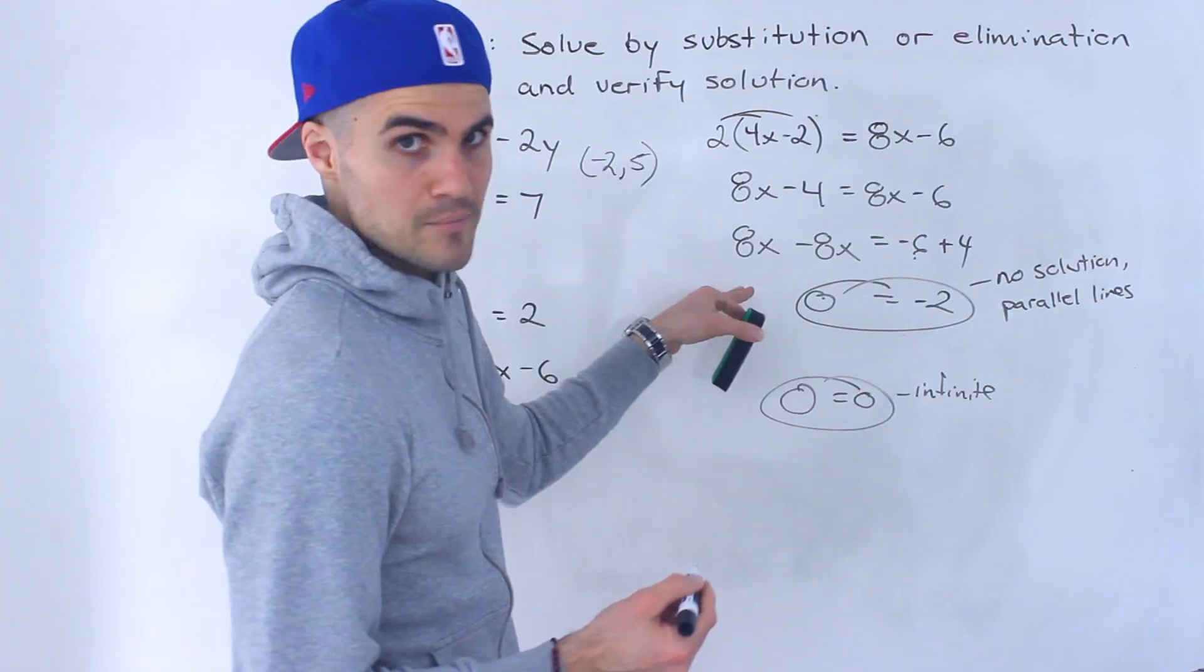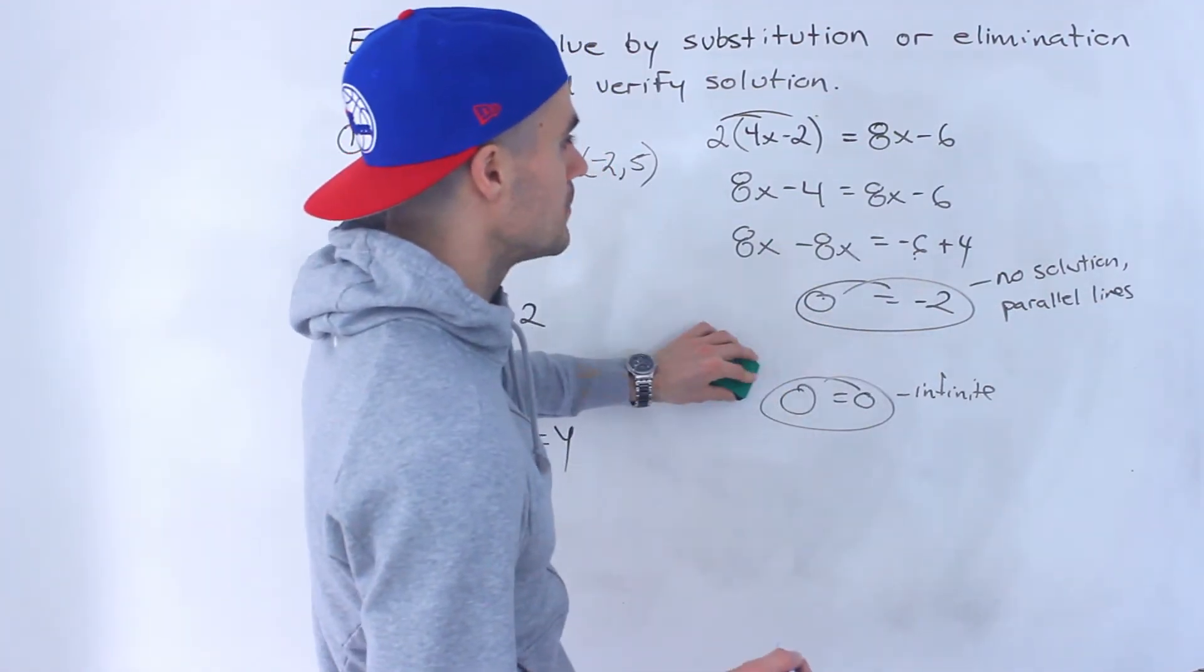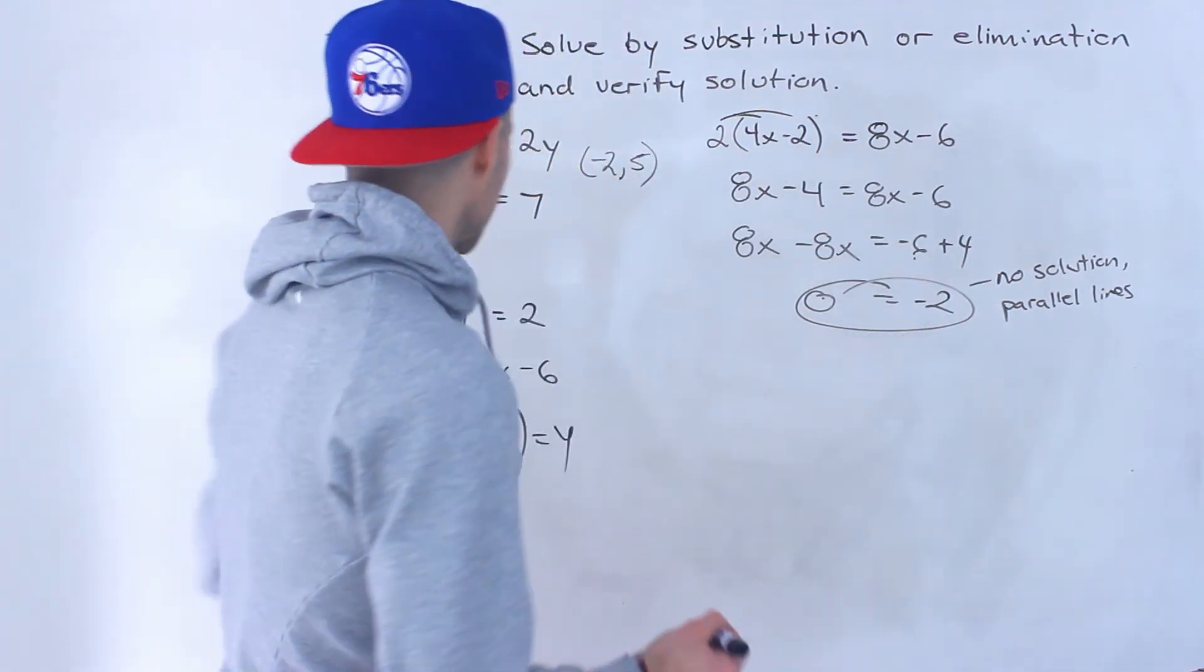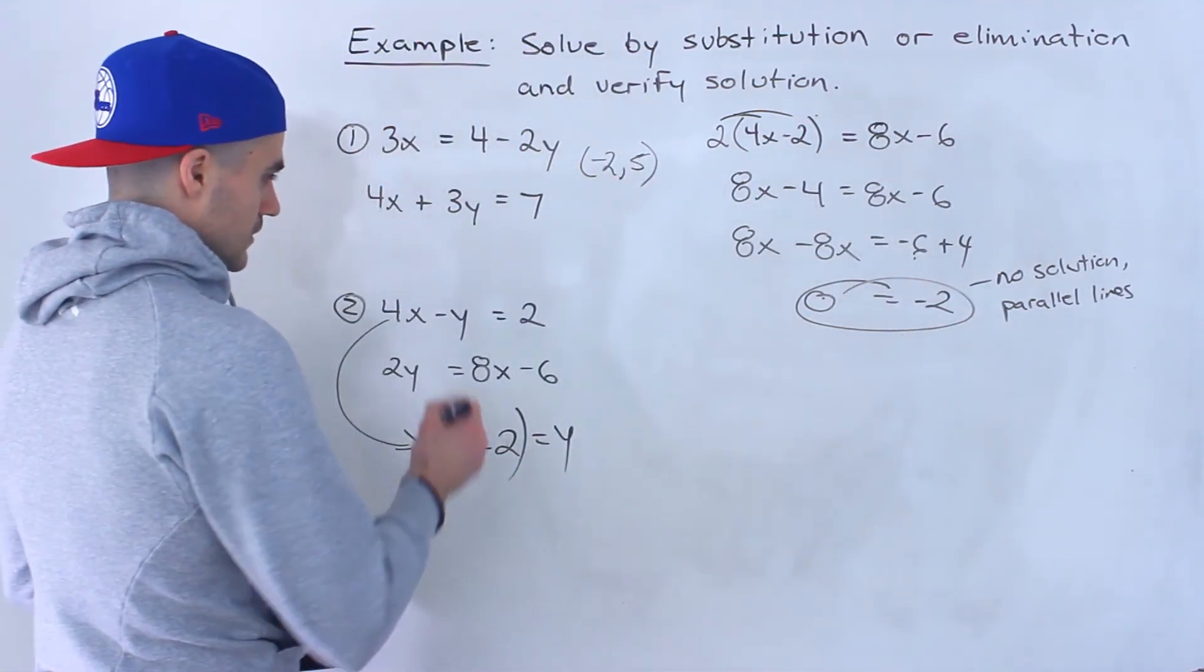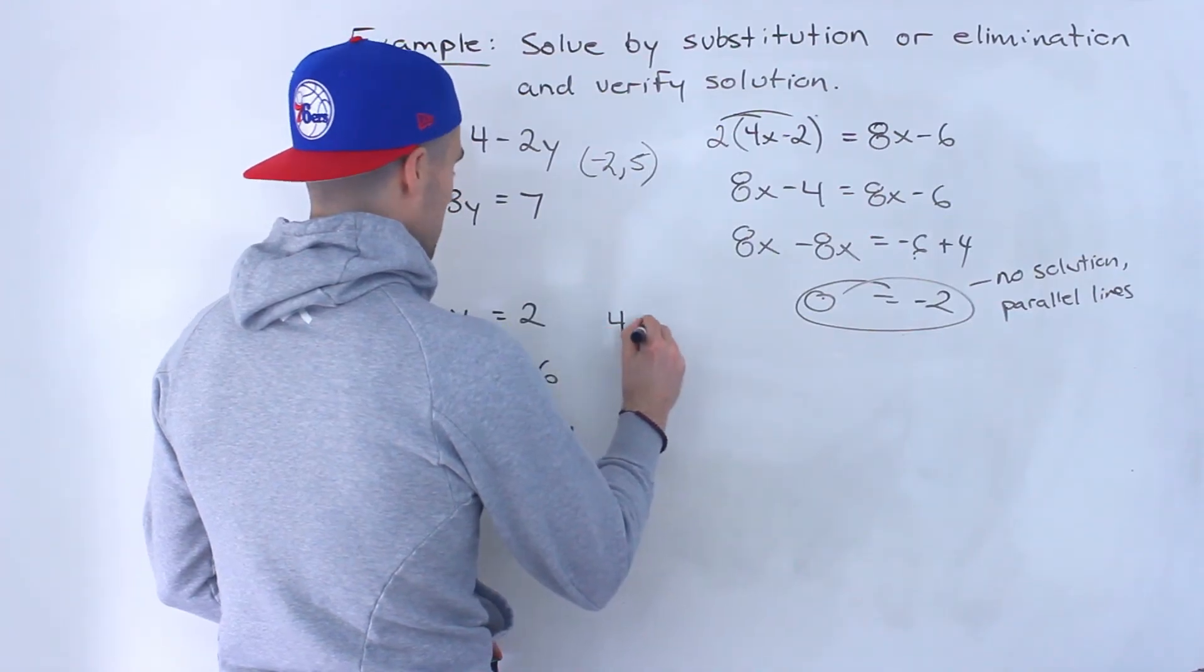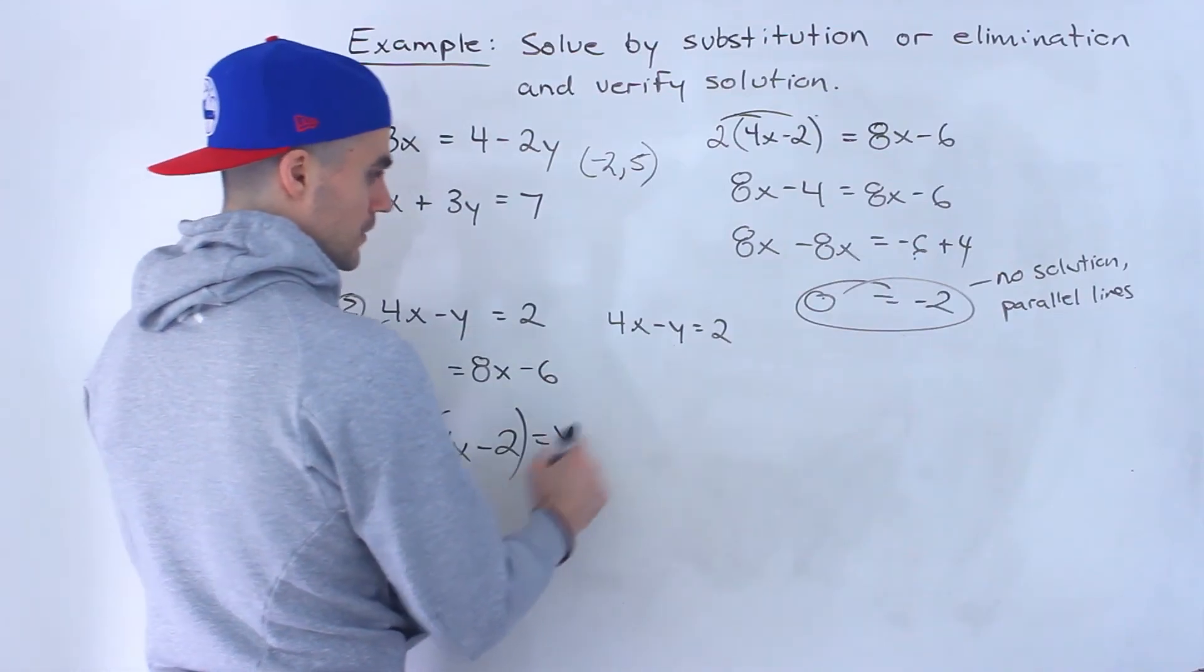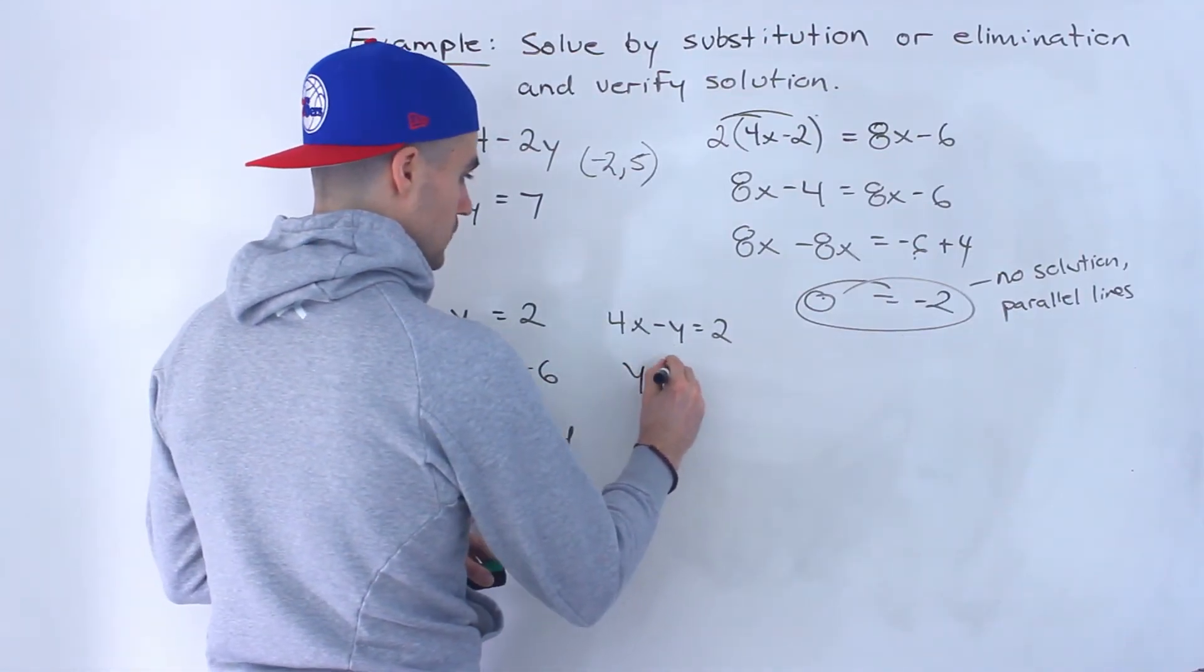That doesn't make sense there. So that would be no solution. And you can actually verify this. So notice that 4x minus y equals 2. Now if we isolate for the y, we already did that here actually. This is the first line if we put into the y equals mx plus b format.